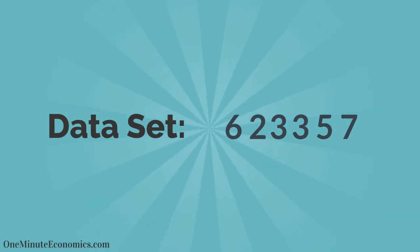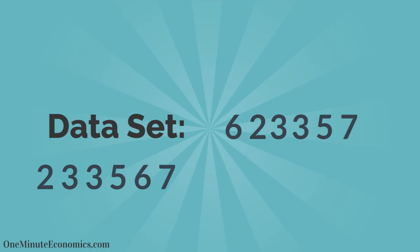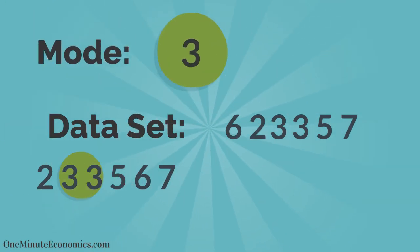To determine what the mode is, it helps if we order them from lowest to highest as follows: 2, 3, 3, 5, 6, 7. As we can see, the mode is 3, the only value that appears twice in our string.